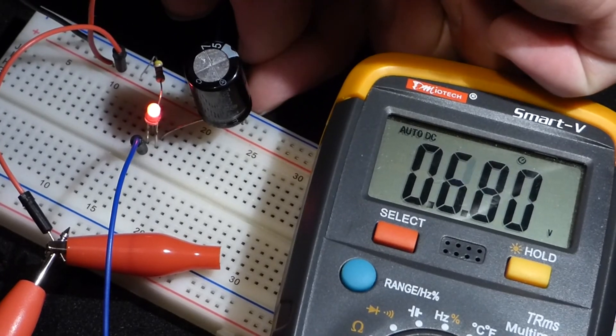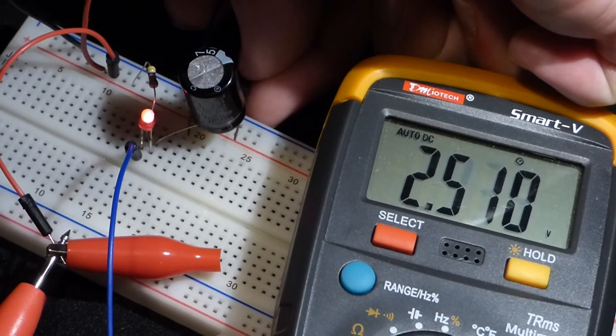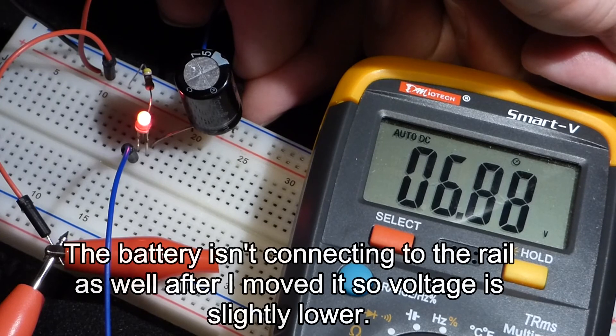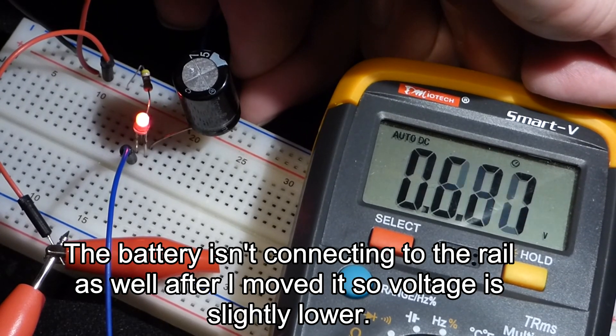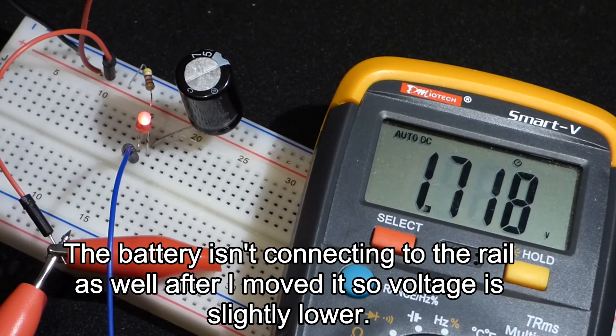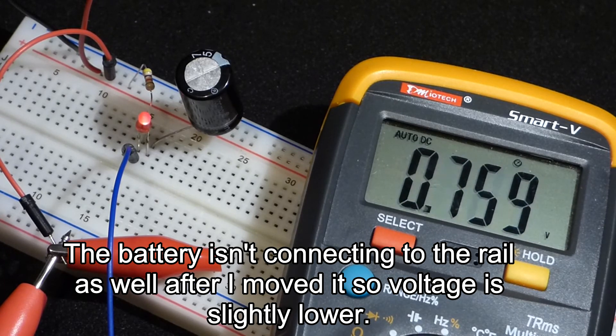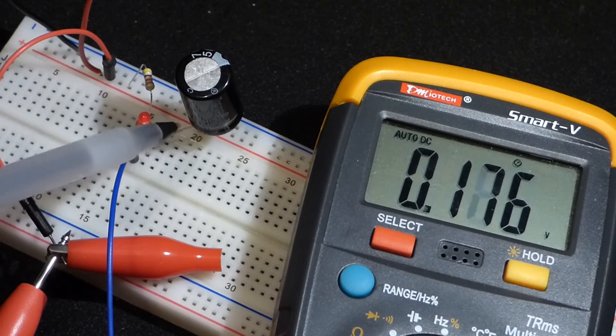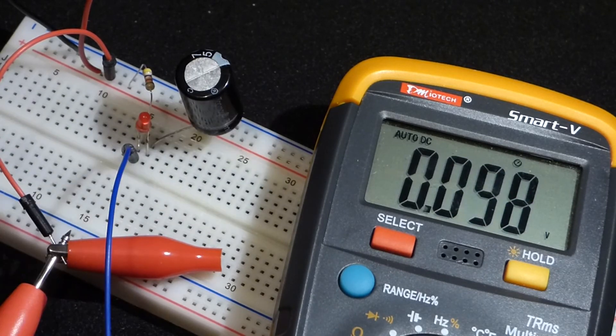You'll notice that while it's shorted out we have about the battery voltage minus the drop of the LED. That's while the wire shorted out the current flowing through the wire instead of the capacitor. But when I remove the wire, now the capacitor is charging.